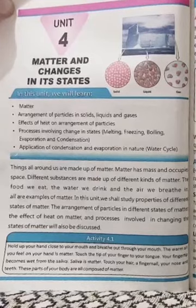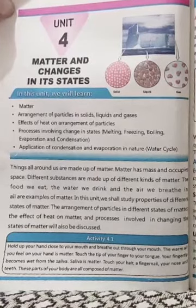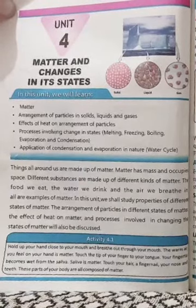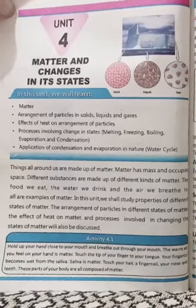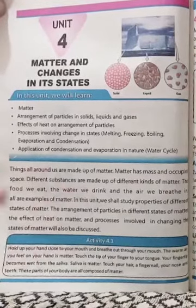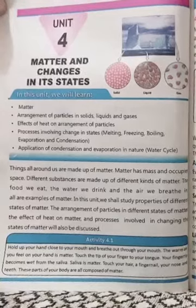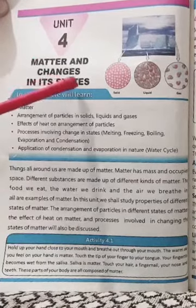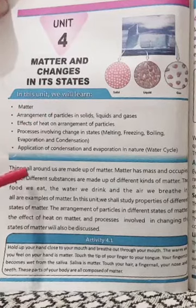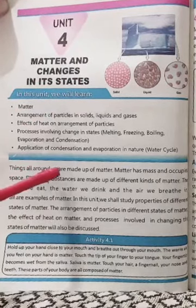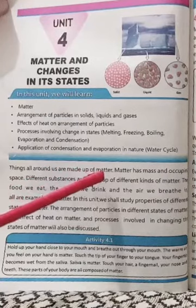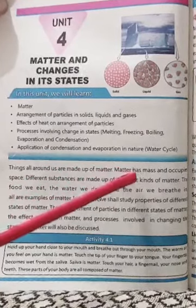Assalamualaikum students. This lesson is for class 5, subject science, topic reading book page number 44, unit number 4: Matter and Change in its States. Things all around us are made up of matter. Matter has mass and occupies space.